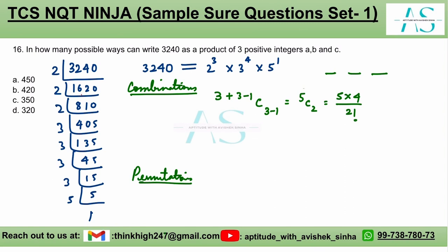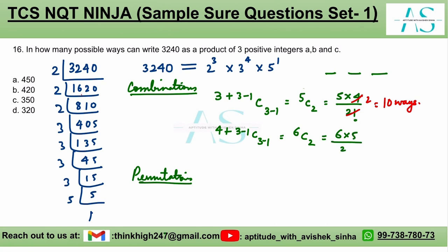Second, for all the 3s: we have 4 threes, so (4 + 3 - 1) C (3 - 1) = 6C2. And 6C2 is 6 × 5 divided by 2 factorial, which gives us 15 ways.